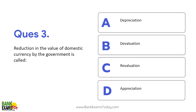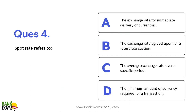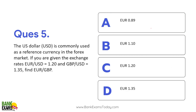Reduction in the value of domestic currency by the government is called devaluation — apni currency ki value ko kam kar dena. Pakistan did this in the past 2-3 years — the government itself devaluates the currency. What is spot rate? Spot rate is the exchange rate for immediate delivery of currency, also known as the cash rate.